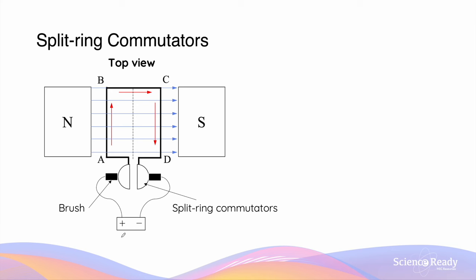The brushes, unlike the split ring commutators, are not connected to the armature. So as the armature rotates, the brushes will remain in their position while the split ring commutators rotate. This is another diagram showing what split ring commutators and brushes look like. The commutators rotate with the armature while the brushes remain fixed in place.